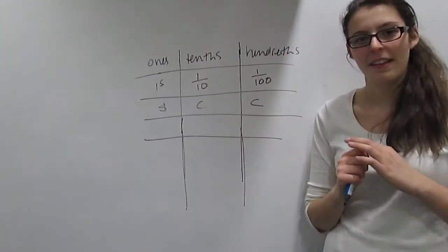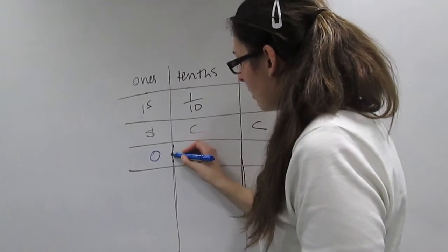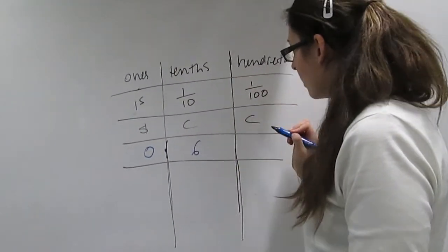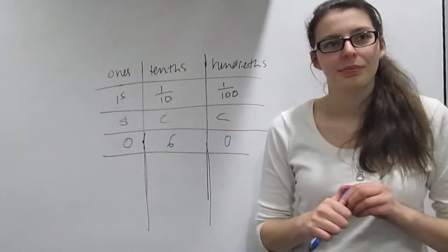So how can we write that in our place value chart? Fantastic Helen. So what does this mean? Can you explain?